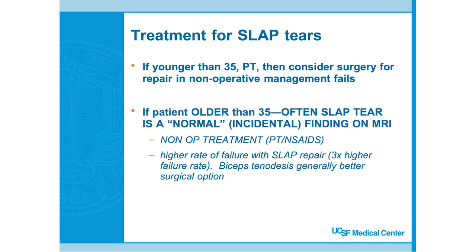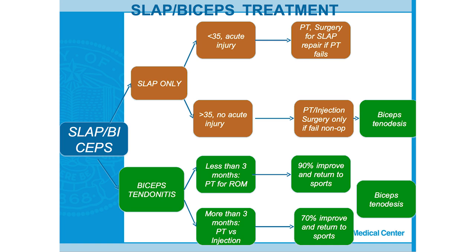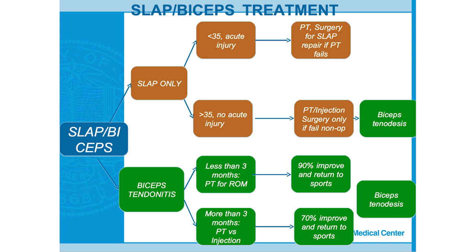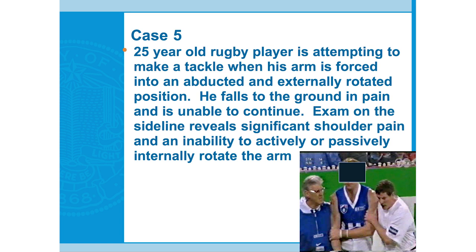In older patients we typically try non-operative treatment for superior labral tears and don't usually repair them. Sometimes we'll disconnect the biceps and reattach it to the shoulder to eliminate traction on the labrum, since older patients tend to get more stiffness with a labral repair. The key takeaway: SLAP tears in patients over 30 — more like 40 — tend to be non-operative. Don't freak out if you see it on an MRI; it's often incidental. Biceps tendonitis is more a physical exam diagnosis and can be treated with PT, rest, and sometimes an injection.